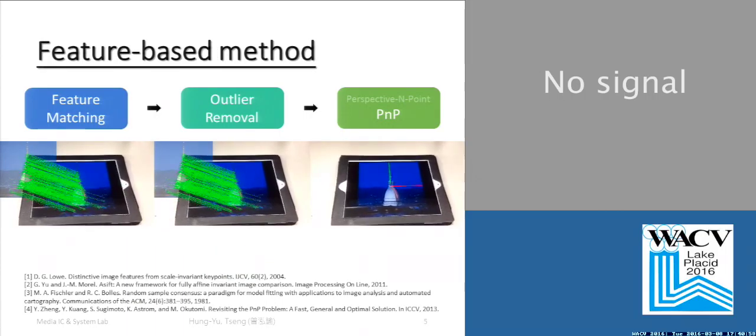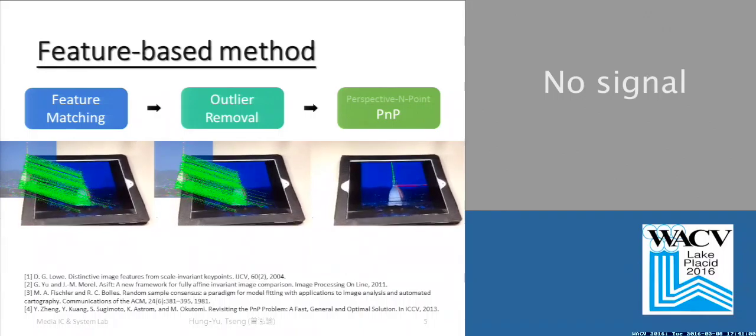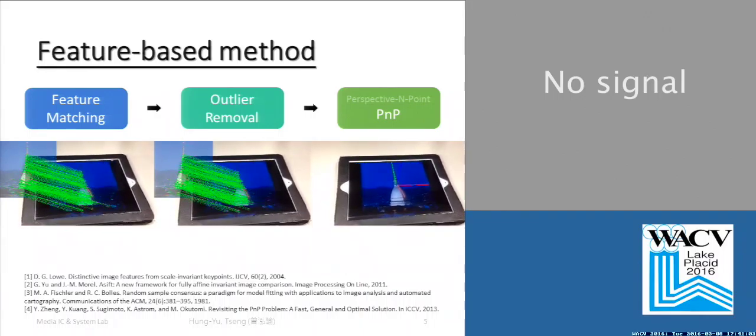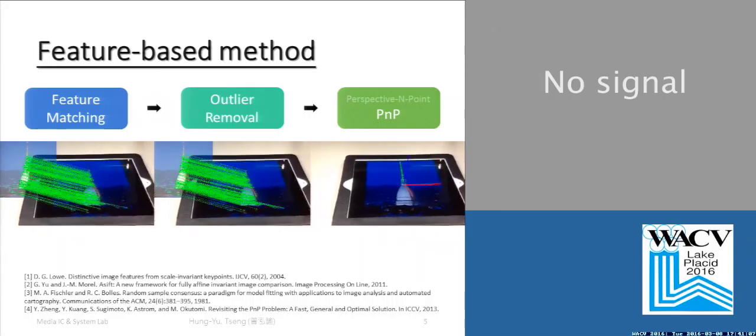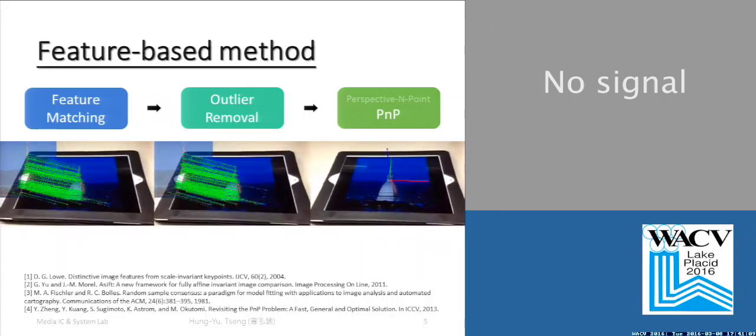The state-of-the-art method belongs to feature-based methods. The flow is getting correspondences through feature matching and outlier removal. Then the perspective n-point PnP algorithm will estimate the pose.